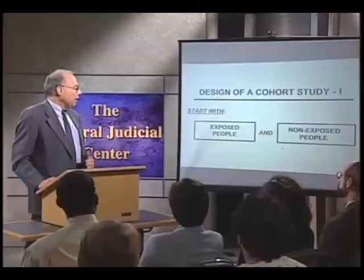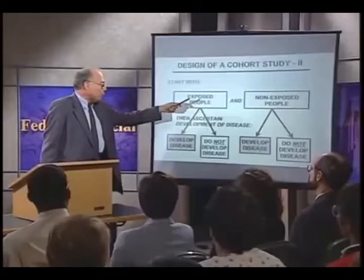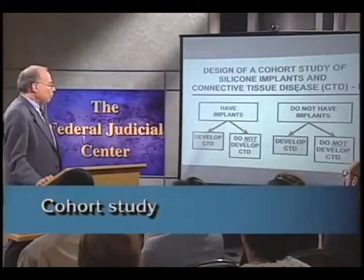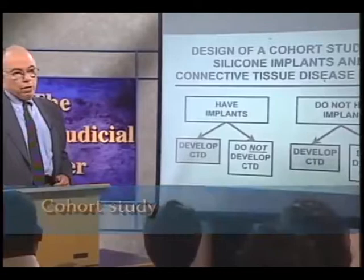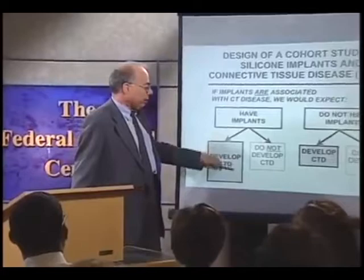In a cohort study, we begin with exposed people and compare them to non-exposed people — this is the hallmark of a cohort study. We then ascertain what proportion of both groups develop the disease in question. If exposure is associated with disease, we would expect that a greater number of exposed people will develop the disease than do non-exposed. If we apply this to the issue of silicone breast implants, we would identify women who've had implants, compare them to women who've not had implants, and look at the development of connective tissue disease in both groups. If implants are indeed associated with connective tissue disease, we would expect to see a greater proportion of the implant group developing connective tissue disease than of the non-implant group.